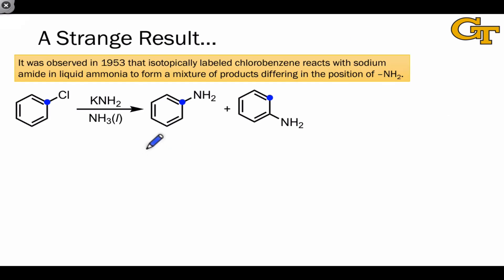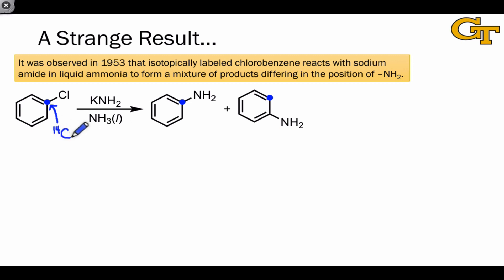Although this rather odd substitution at a position different from where the leaving group is located in aromatics was observed before 1953, a seminal study in that year showed definitively that substitution was occurring at the carbon adjacent to the carbon bearing the leaving group in situations like this where chlorobenzene is treated with potassium amide. In this key study, they used carbon-14 labeling of the carbon attached to the chlorine to show that the product is a mixture — the typical nucleophilic aromatic substitution product in which the labeled carbon becomes bonded to the nucleophile, and a different product in which the nucleophile becomes bonded to the 2-position relative to that labeled position.